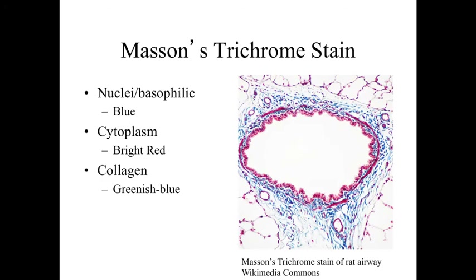Masson's trichrome stain is another specialized stain for looking at connective tissue. In this case, the collagens are staining a greenish blue — or more blue in appearance — so we can look at the relationship between the cells, the cytoplasm, and the collagen using these types of specialized stains.